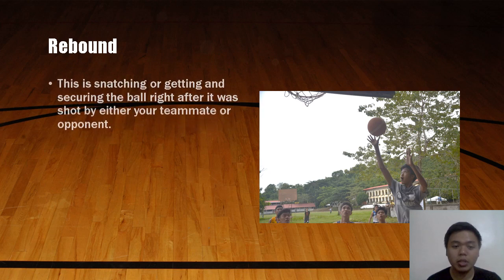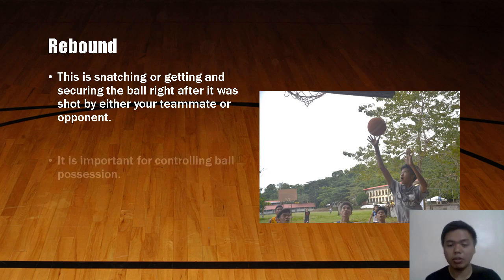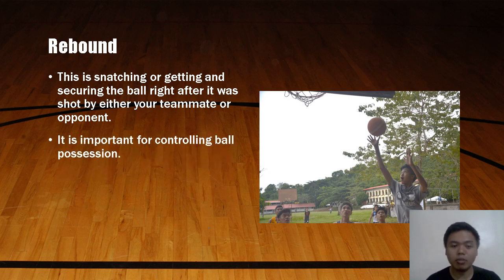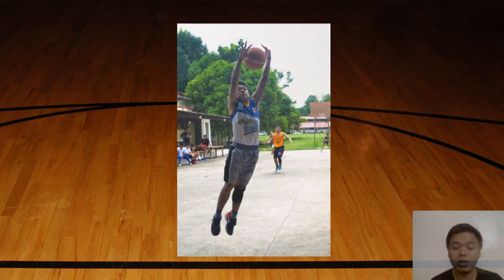Next is Rebound. Rebounding is snatching and securing the ball right after it was shot by either your teammate or opponent. If you get a missed shot after a shot taken by your teammate, it is called an offensive rebound; otherwise, it is called a defensive rebound. It is important for controlling ball possession — whoever rebounds the ball after a missed shot controls who has possession in the game. Here is an example of rebounding.